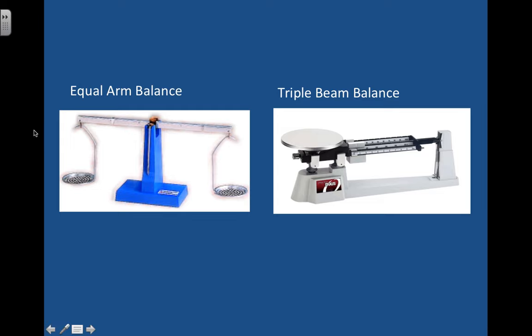So this one here is called the equal arm balance. We won't be using it in this class, but it's important for you to know what it looks like, just in case you're ever asked, what do I measure with this thing? The way you use it is you put an object of known mass on this side, and then you'll put your unknown object on this side, and you keep on changing your known masses until it balances evenly. Once they balance evenly, you can add up all your known masses here, and you know what the mass is.